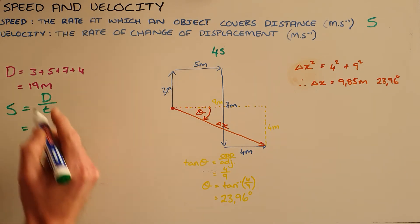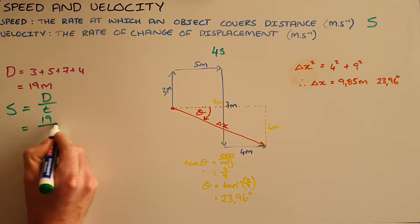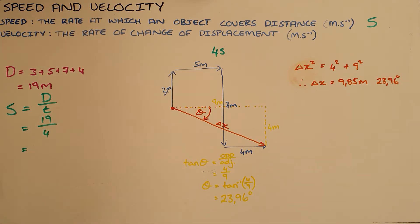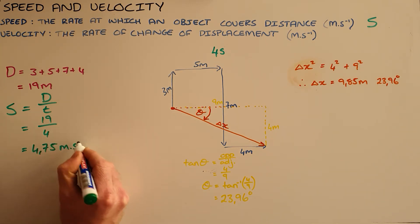The distance we know was 19 meters, the time given was 4 seconds, which means that the speed of this object was 4.75 meters per second.